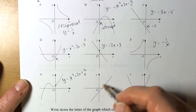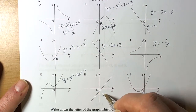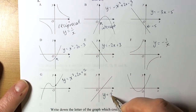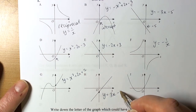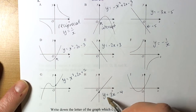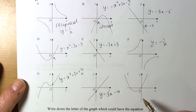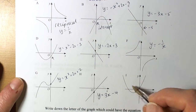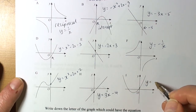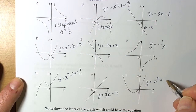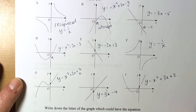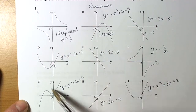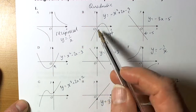Straight line going in the positive direction, so a positive number of x's — say 3x — but going through a negative number, so negative 4. These are just examples of the functions that would create these curves, because they're just sketches. U shape again, positive direction, goes through a positive number. So y equals x squared plus so many x's, plus an intercept point — say plus 2.